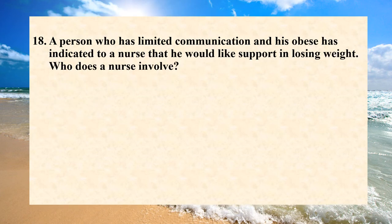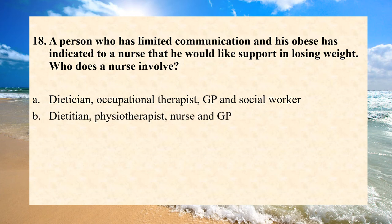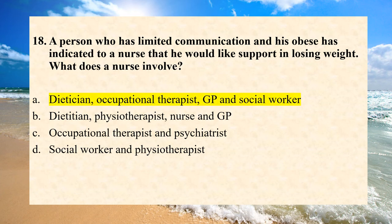A person with limited communication has indicated to a nurse that they would like support in losing weight. Who does the nurse involve? A. Dietician, occupational therapist, GP and social worker. B. Dietician, physiotherapist, nurse and general practitioner. C. Occupational therapist and psychiatrist. D. Social worker and physiotherapist. Answer is A. Dietician, occupational therapist, GP and social worker.